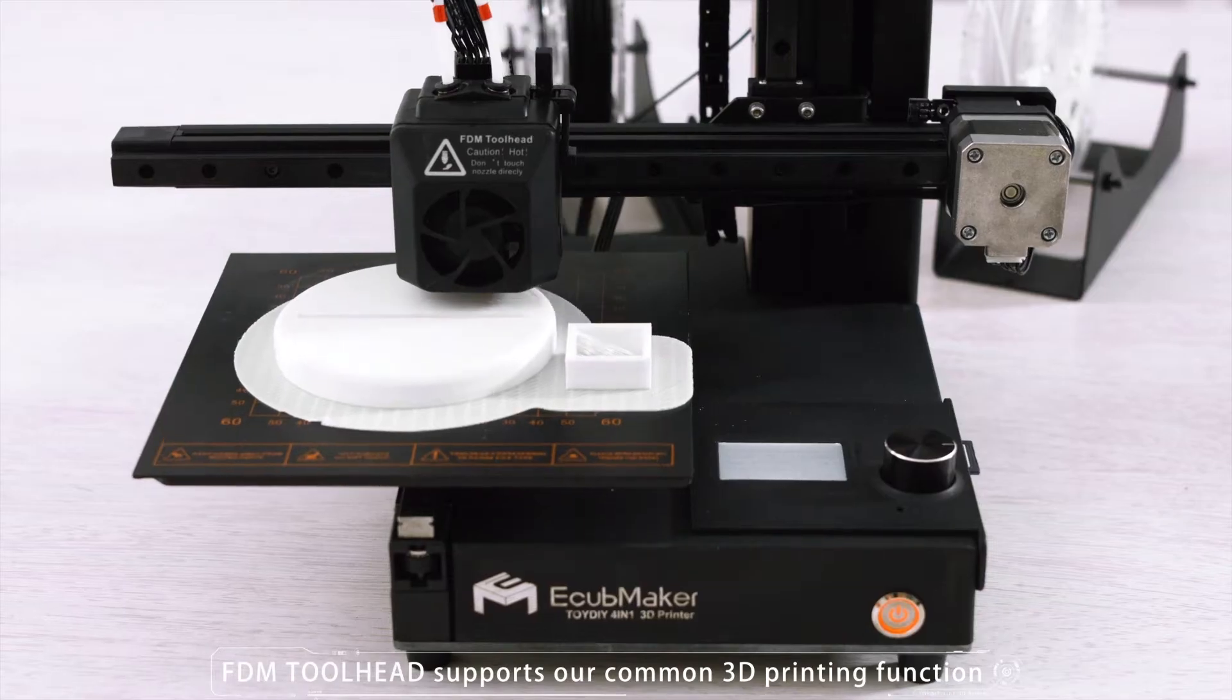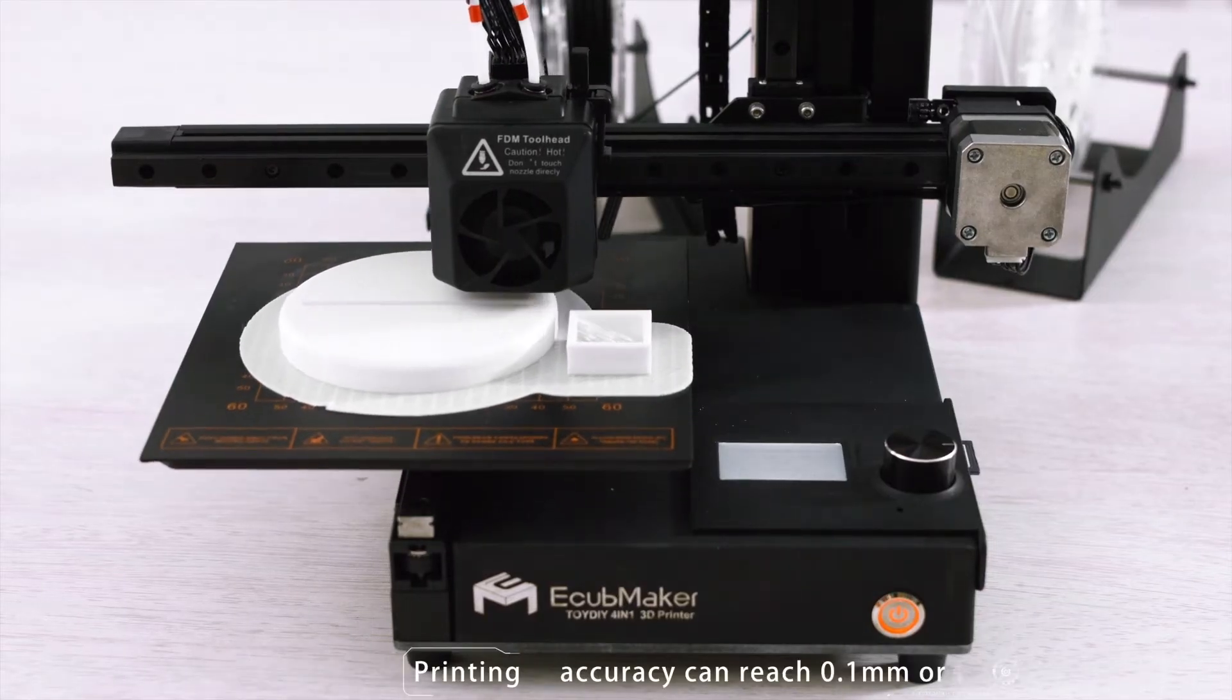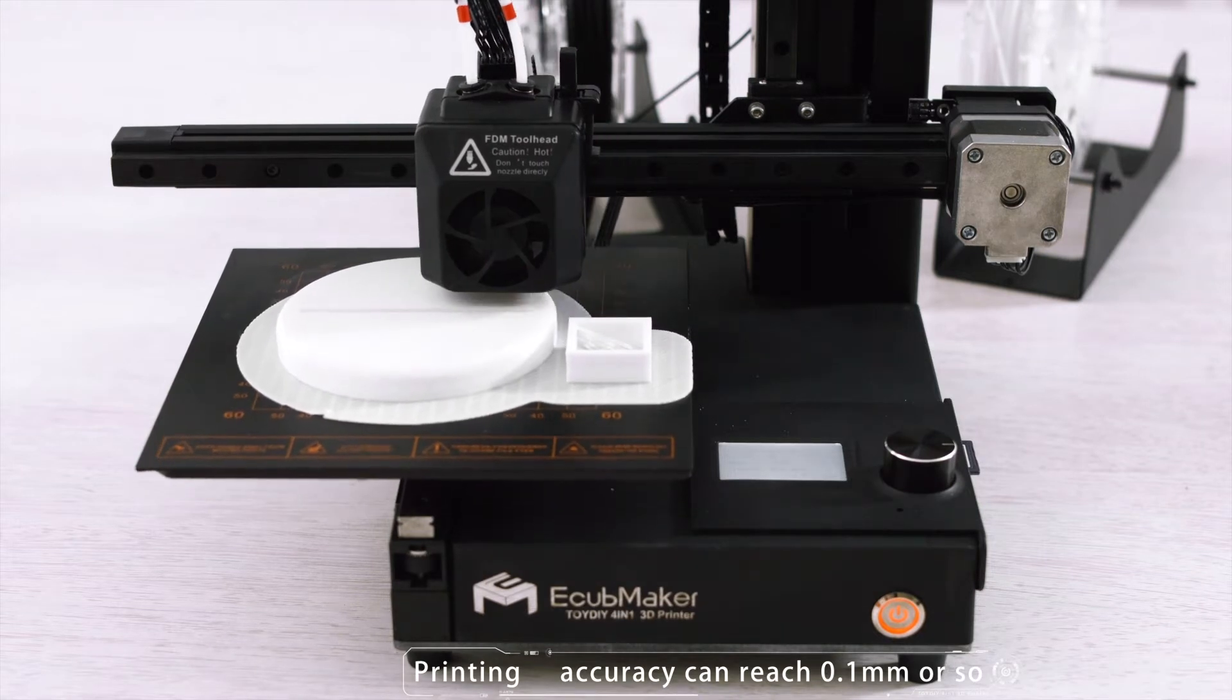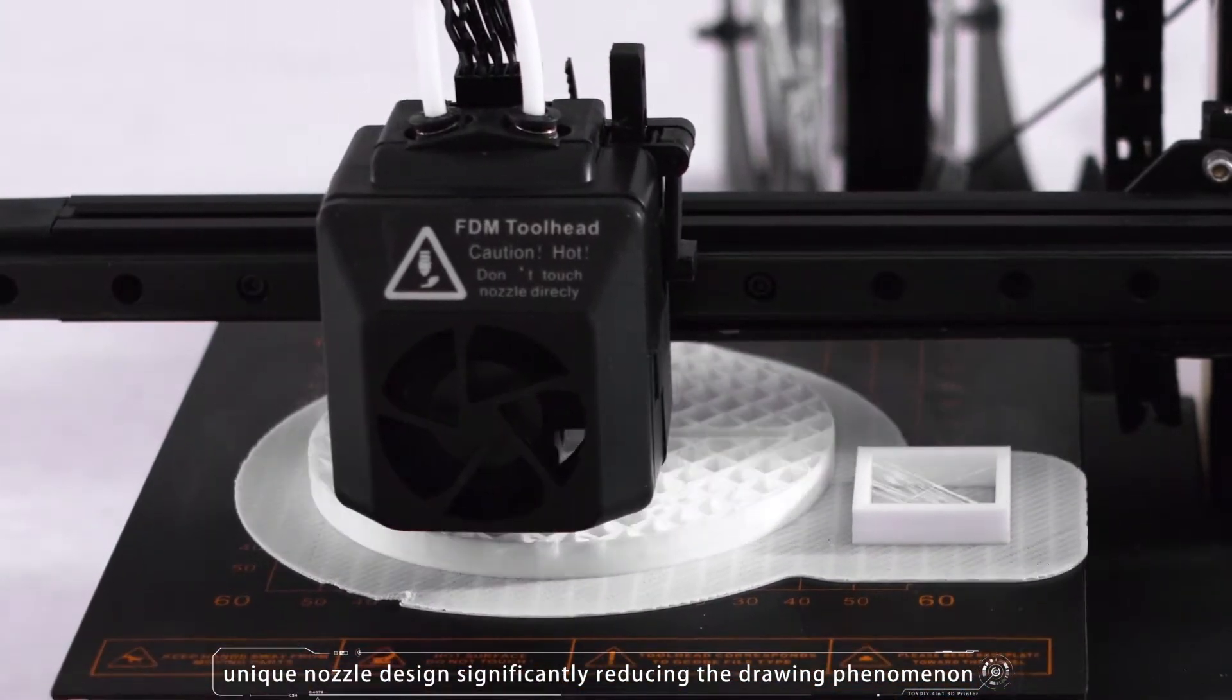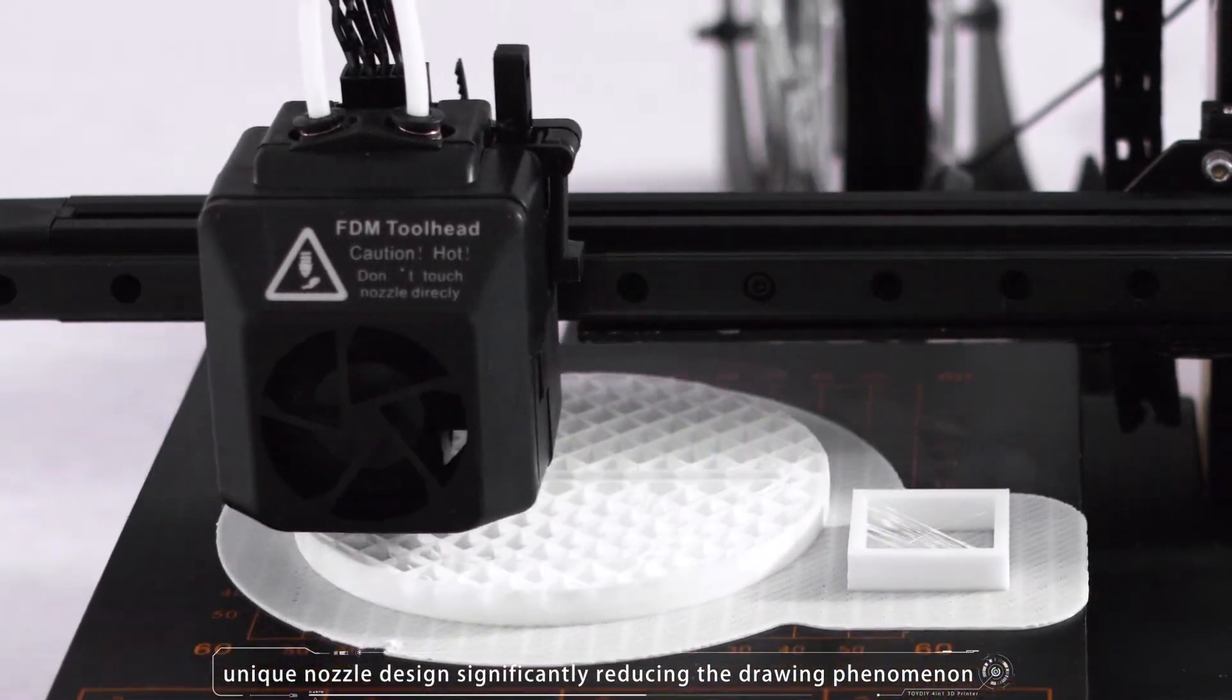FDM toolhead supports our common 3D printing function. Printing accuracy can reach 0.1mm or so. Unique nozzle design significantly reduces the drawing phenomenon.